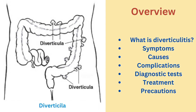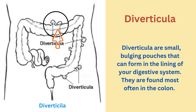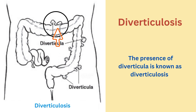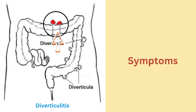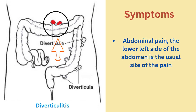Diverticula are small bulging pouches that can form in the lining of your digestive system, found most often in the colon. The presence of diverticula is known as diverticulosis. When one or more of the pouches become inflamed and infected, that condition is called diverticulitis.